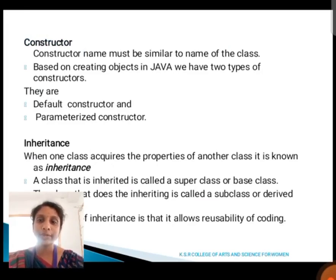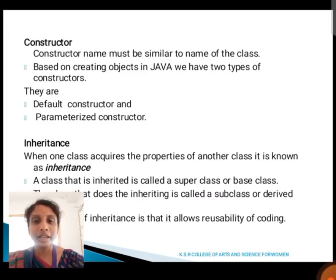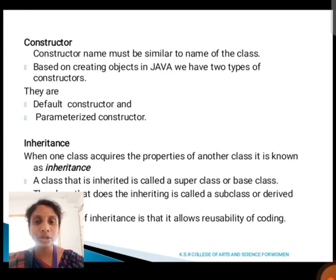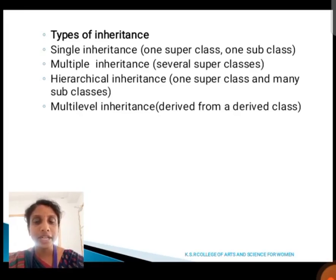Next, we are going to see about constructors and their types. A constructor name should be the same as the name of the class. It is divided into two types: default constructor and parameterized constructor. Inheritance is when one class acquires the properties of another class. The class that is inherited is called the super class or base class, and the class that inherits is called the subclass or derived class. Inheritance allows reusability of code. There are four types of inheritance: single inheritance, multiple inheritance, hierarchical inheritance, and multi-level inheritance.